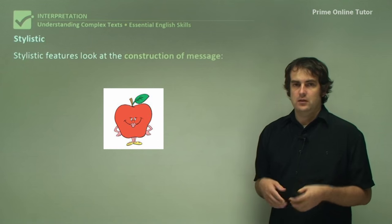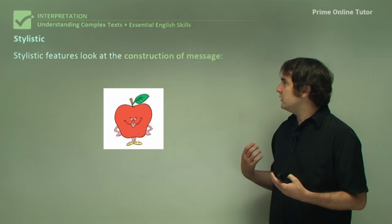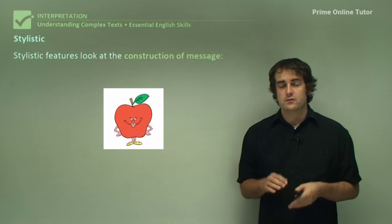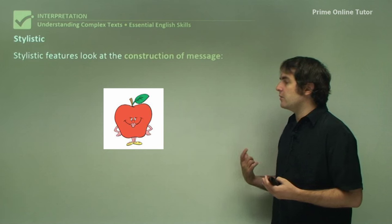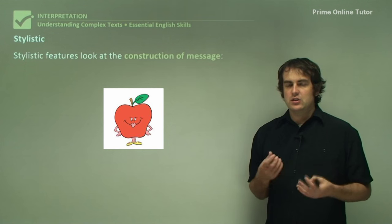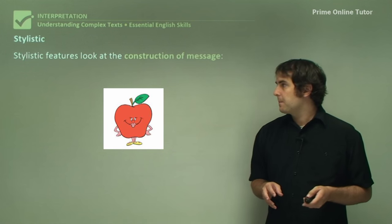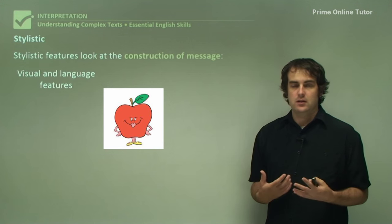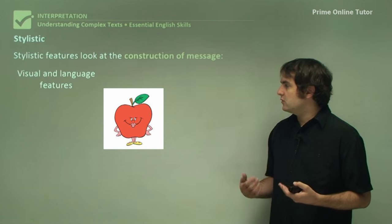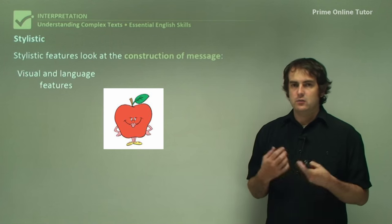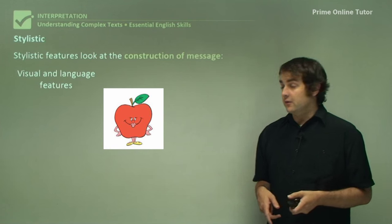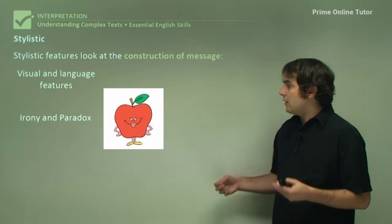Finally, we've got stylistic features. This basically looks at how the message is constructed. This is essentially what language techniques and visual techniques do. They construct message through assembling all those little pieces together. First of all, you have your visual and language features or your language techniques. Those things which pretty much stand out straight away, and the ones that you'd be probably familiar with studying because you would have had them hammered into you for a very long time now.